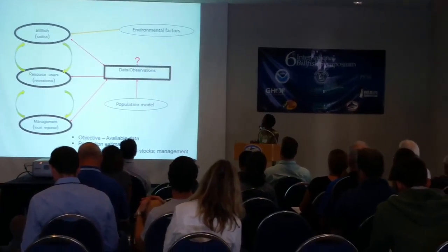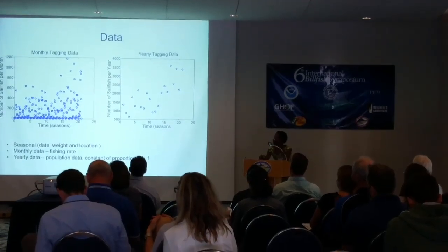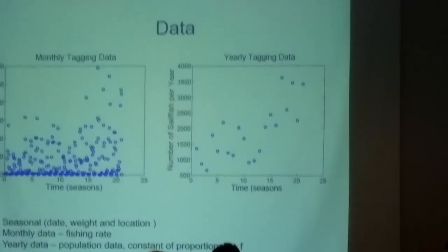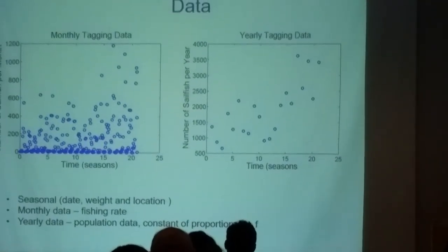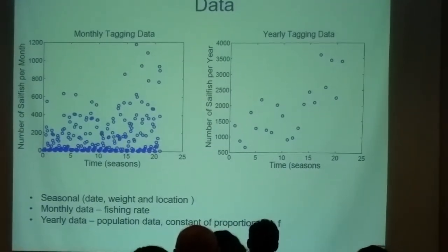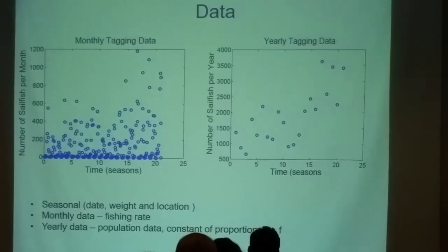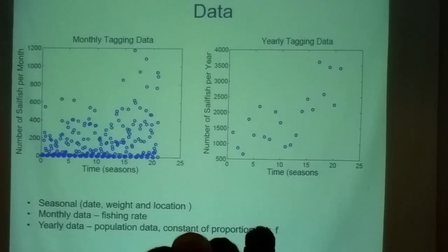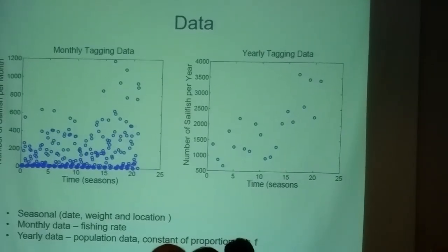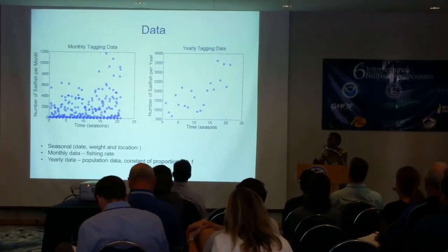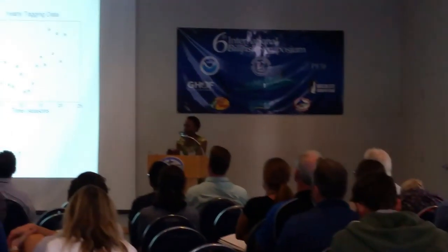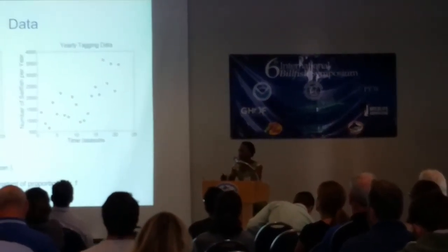The data we extracted from the African billfish database, mainly for sailfish. The way this data is collected is on a monthly basis — we have the date, weight, and location where the fish were caught, captains reporting. We treated the yearly data to stand for our population data, and because our monthly data captures the changes in fishing dynamics, we treated that as our fishing data to calculate the fishing rate.